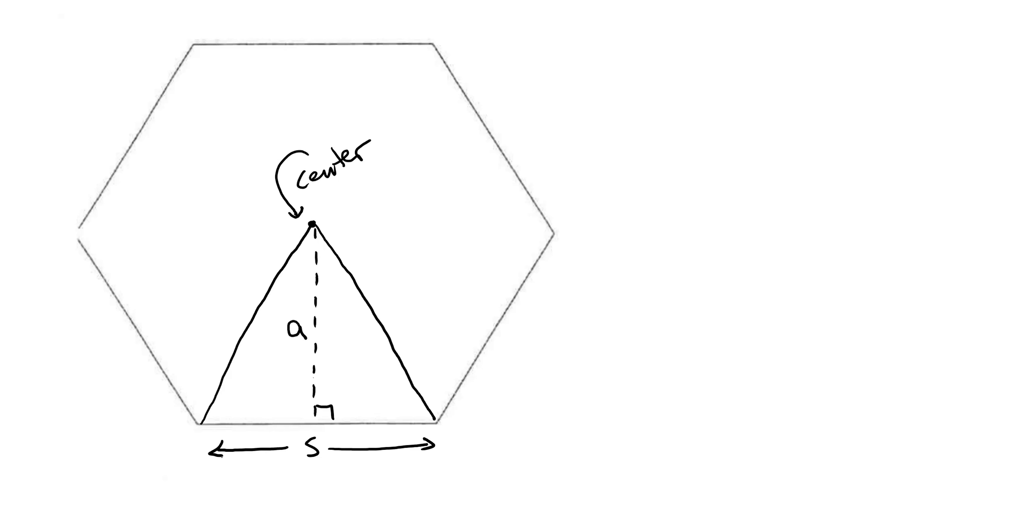So based on how I have my diagram labeled, if I wanted to find the area of the triangle here, it would be base times height. So the base is S and the height is A. So that would be S times A divided by 2. That would just be the area of this one triangle here.